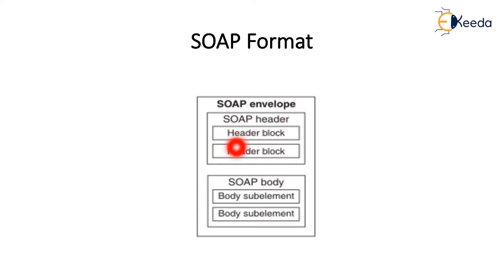The body contains the XML data comprising the messages being sent, and it is a mandatory element. There is also an optional fault element that provides information about errors that occur while processing the message. All these elements are declared in the default namespace for the SOAP envelope.